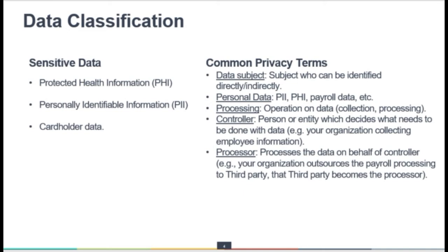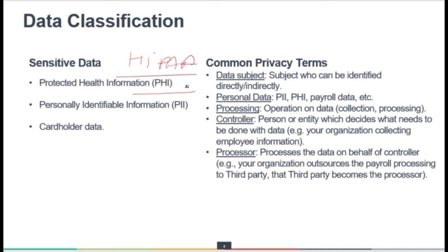In terms of sensitivity, we have PHI, PII, and cardholder data. PHI — protected health information — is related to the past, present, or future health status of any individual, created or used in the course of providing healthcare services, including payment for those services. PHI can include things like diagnosis, treatment information, test results, and prescription information, as well as other PII such as gender and birth date.